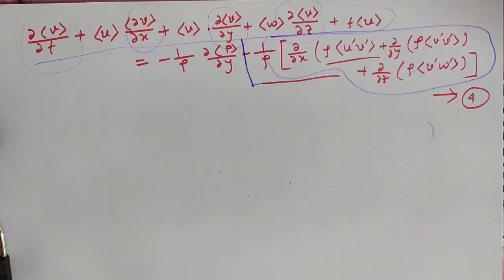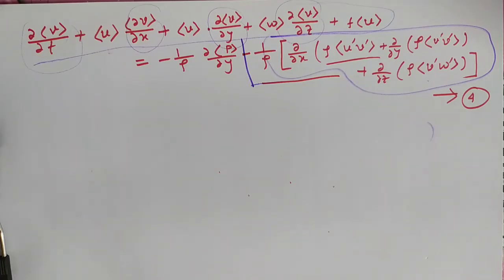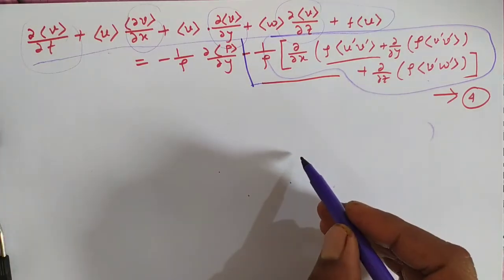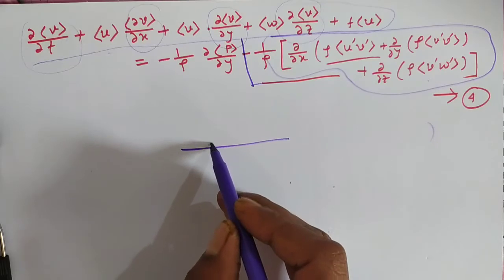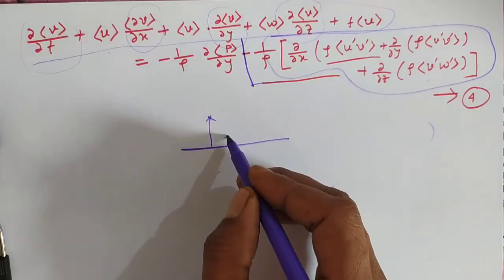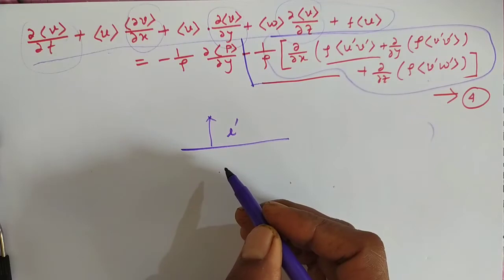We will consider only the vertical eddy stress term. According to the mixing length hypothesis, a parcel of fluid which is displaced vertically will carry the mean horizontal velocity of its original level for a characteristic distance L prime, analogous to mean free path in molecular viscosity. Let us consider a parcel from the surface going a characteristic length L prime vertically.